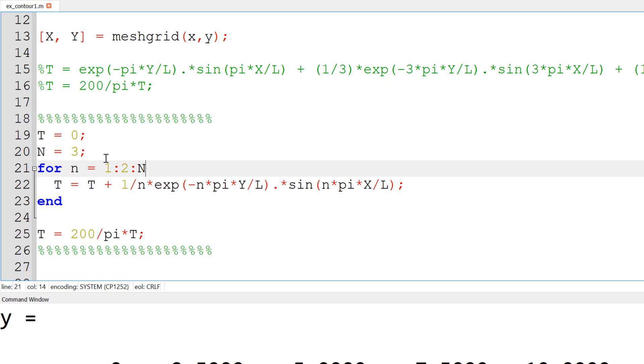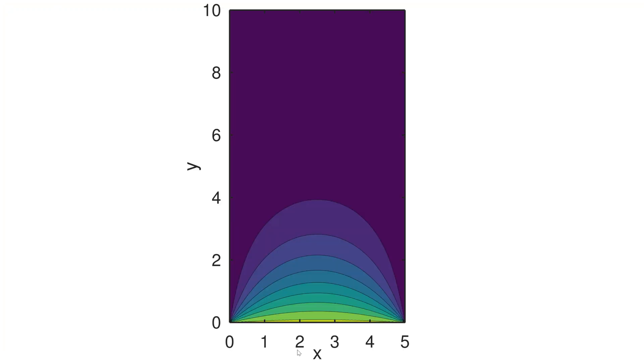Now, nice thing about this for loop, we can expand your result by changing only one parameter. You can make your solution better by increasing more n terms. Now I can increase up to the hundred and one. Now see it works better.